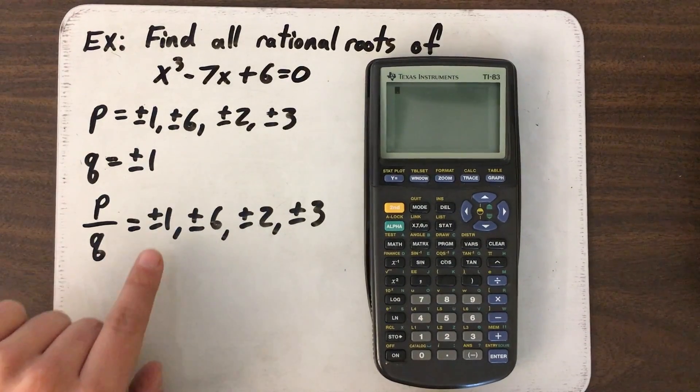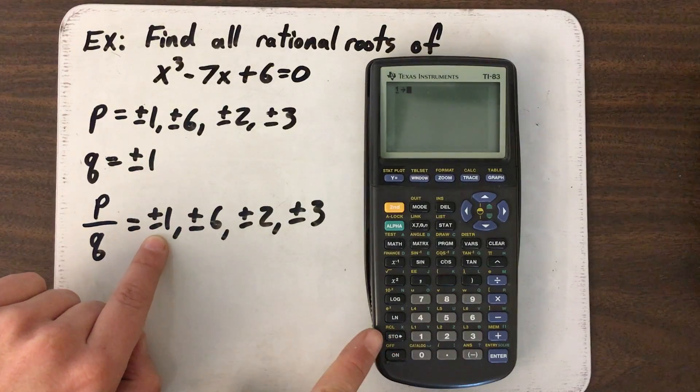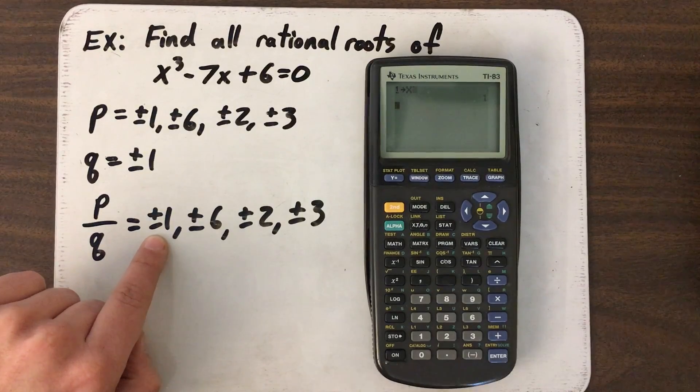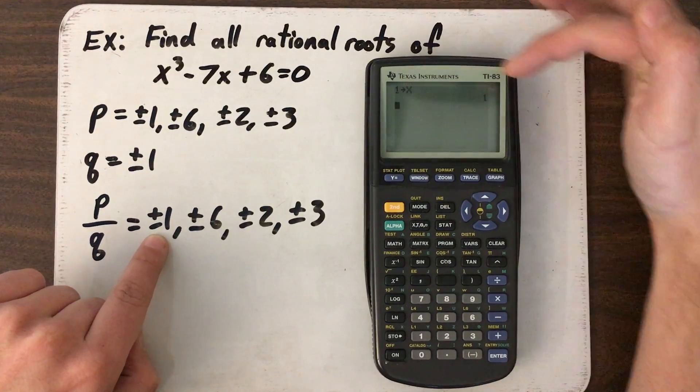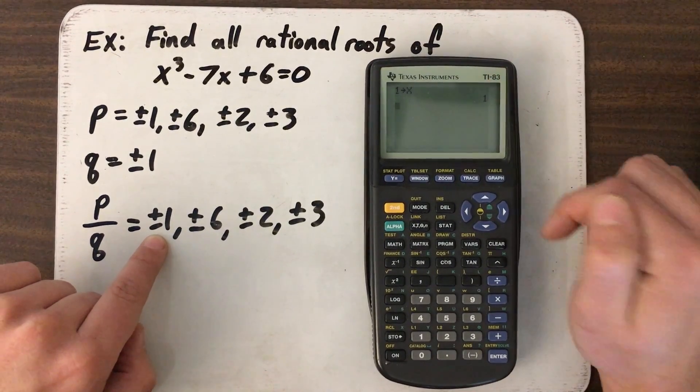Before I do that, I'm going to pick which value I want first. Maybe I want to test one first. So I'm going to say one, I'm going to store it, S-T-O, with an arrow down here, and I'm going to store that value for X and press enter. When I press enter, the calculator says one stored for X. It just confirms basically that you've stored one, the value in there for X.